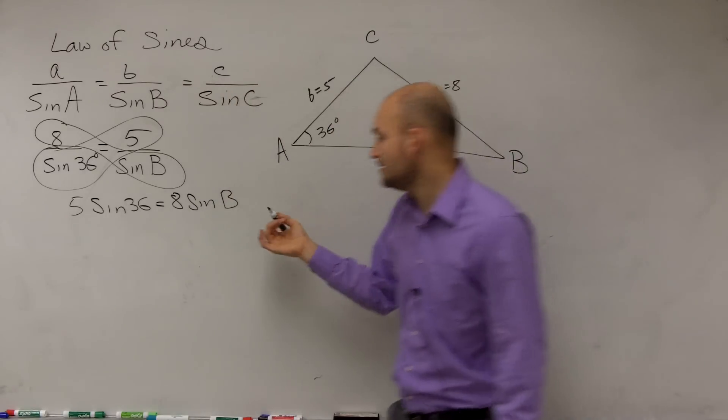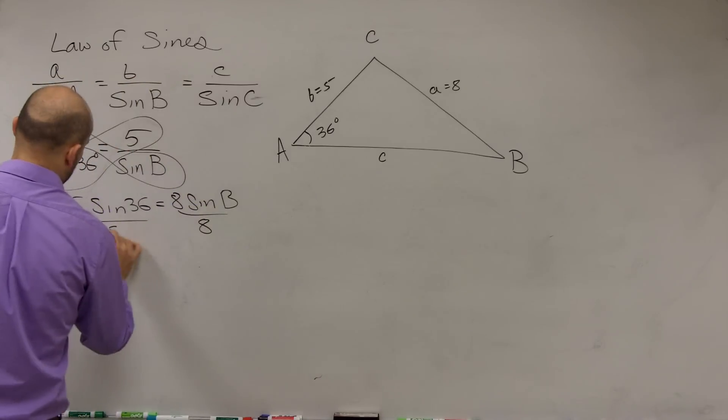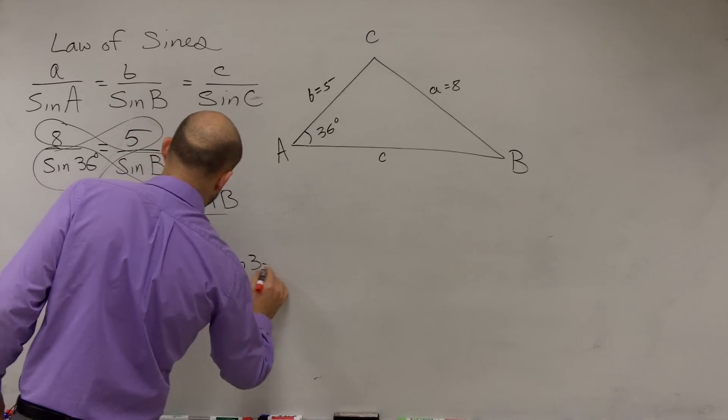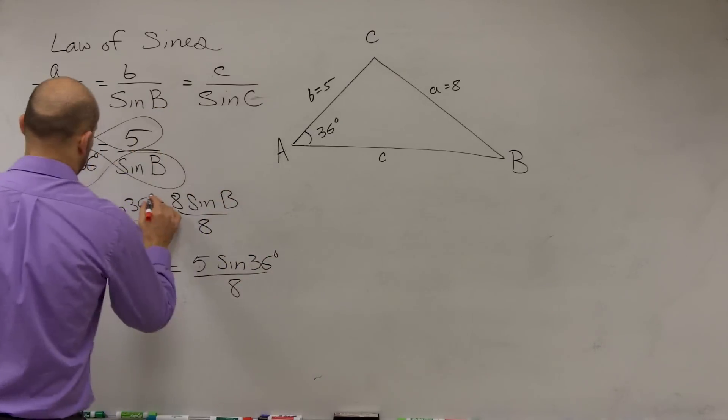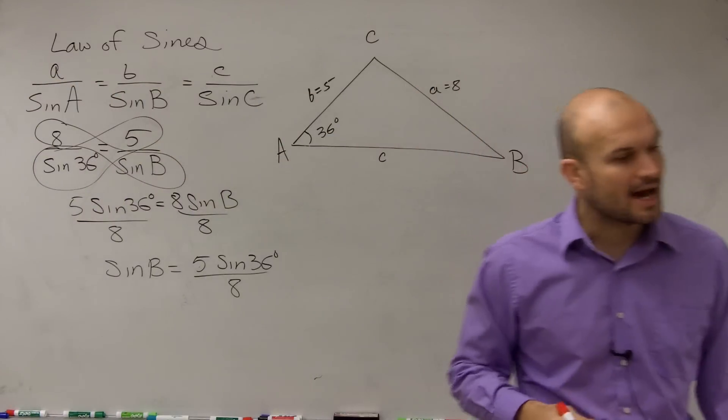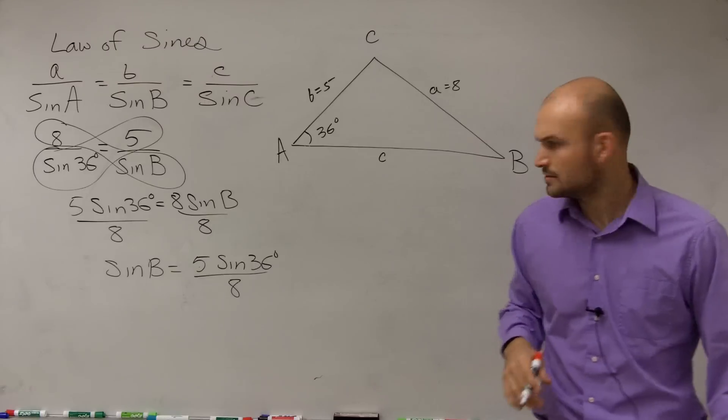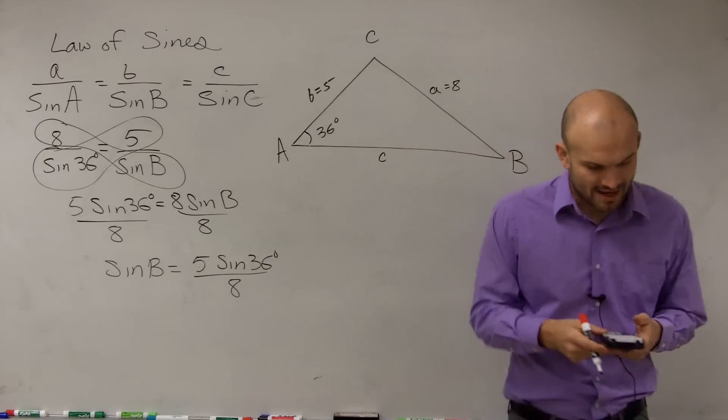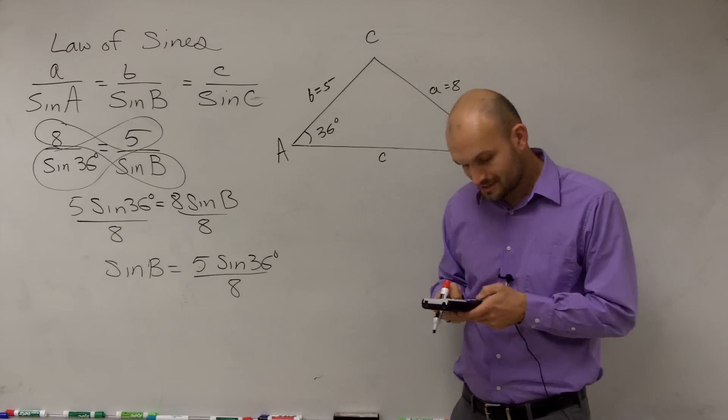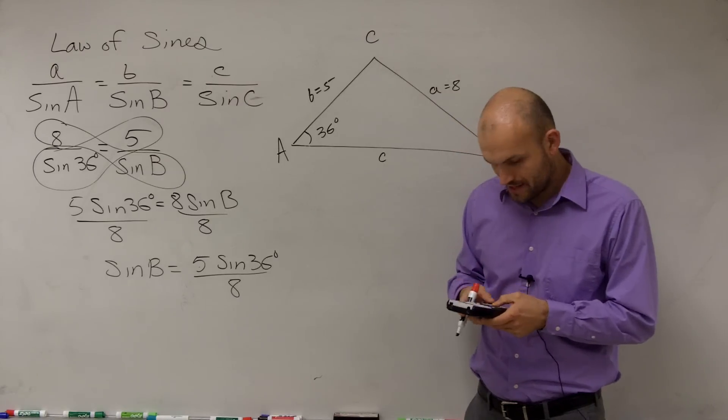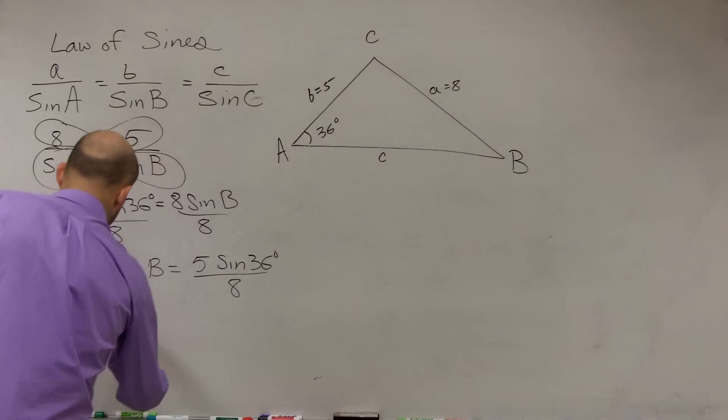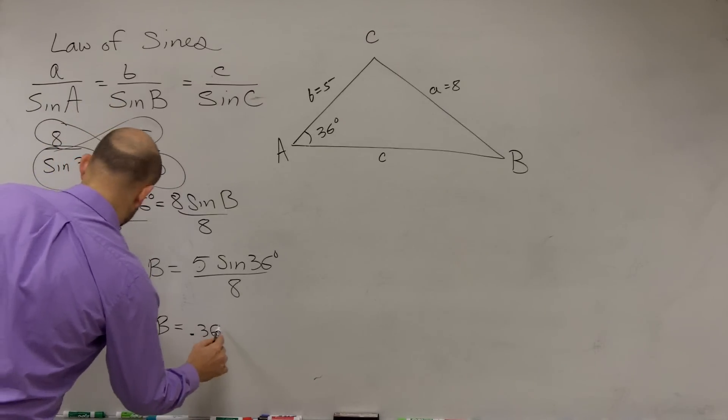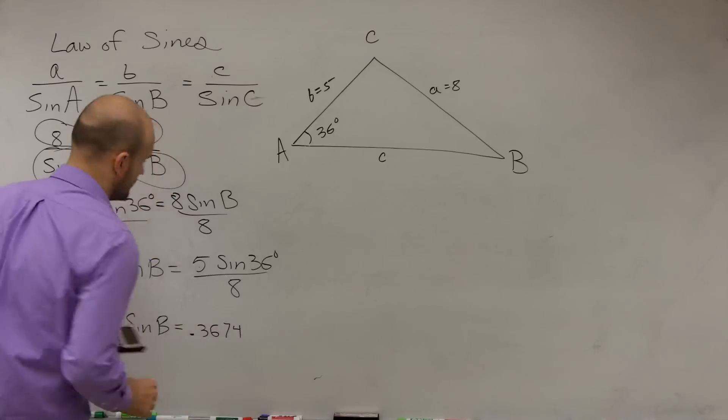Now to isolate my sine of B, I need to divide by 8. So therefore, I say sine of B equals 5 sine of 36 degrees all over 8. Now let's spend some time and go through and actually evaluate what that value is going to be. So I take 5 times the sine of 36, and I'll divide that by 8. And therefore, I get the sine of B equals 0.3674 when I round it.